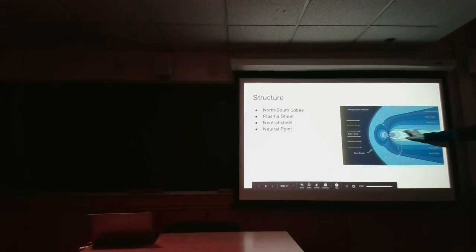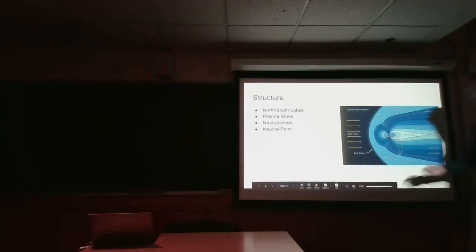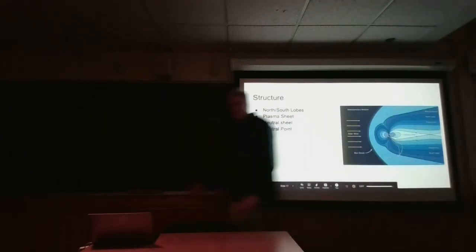The plasma sheet is this region in between the lobes up until this neutral point. So after this it becomes a neutral sheet, and that's just the general region in the parts that I'll be talking about.